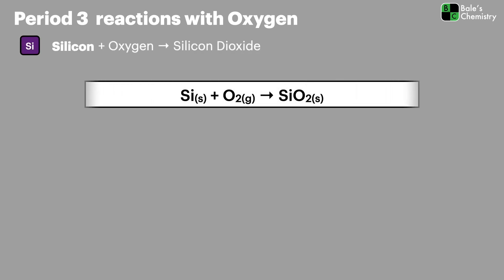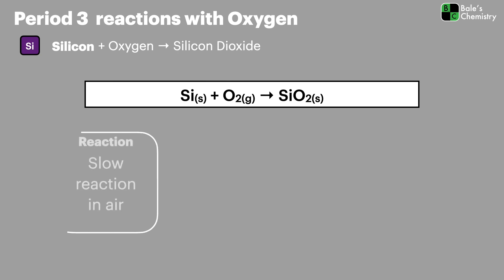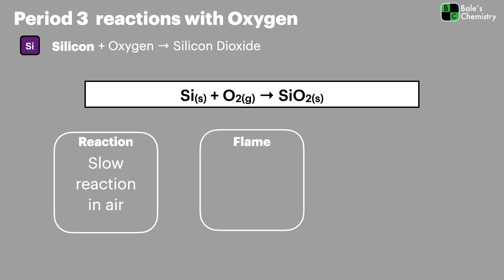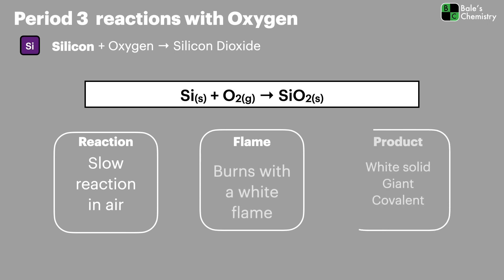When silicon burns with oxygen to form silicon dioxide, it can be slow in air but burns vigorously when heated. It burns with a white flame and produces a white solid with a giant covalent crystal structure — silicon dioxide, which we commonly know as sand that we find on the beach.